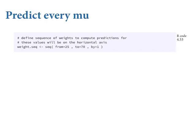Let me show you a convenience function in the rethinking package called 'link', which automates the procedure from the previous slide. This works for anything you can fit with map. When you fit the map model, you told R the model, so there's no point retyping it. I always show you the raw way things work first so you know what you're doing. But in your daily life you want automation because you're in a hurry. And if things malfunction and you can figure out a way to break the software, let me know — I'm trying to make it as bulletproof as possible.